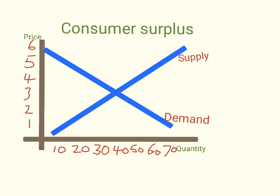Let's take a look at this supply and demand curve. You can see an upward sloping supply curve and a downward sloping demand curve. The equilibrium for this particular product is at the intersection of the two curves, which is around three dollars, and we get a quantity of about forty. So people are buying the product at three dollars in a free market.